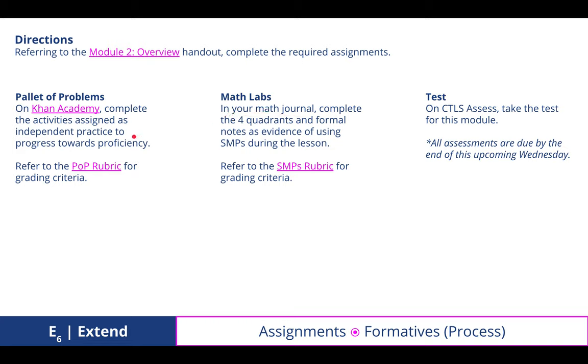I've given 2 additional activities in Khan Academy, so that's a total of 17 activities. You have your math labs. There have been 4 of them, so there should be 4 sets of 4 quadrants with the facing notes on the right. And then I've assigned to you on CTLS Assess the district-mandated touchstone that covers this module and the previous module as a cumulative test. All of these assignments are due this upcoming Wednesday. That way I have time to grade them before we take our break.